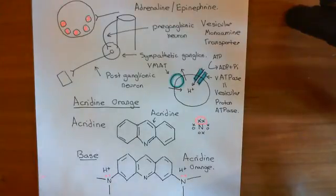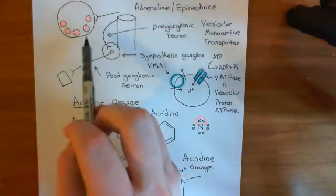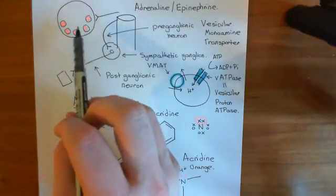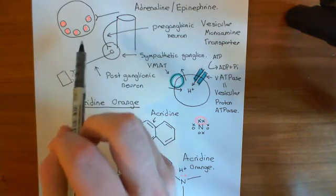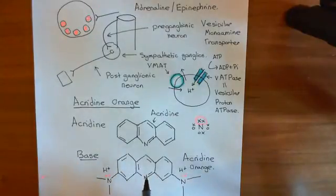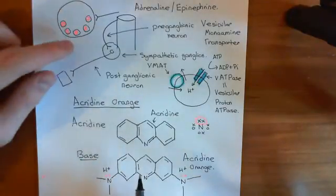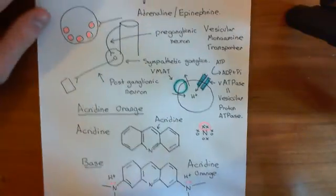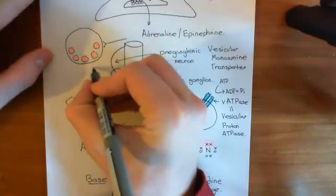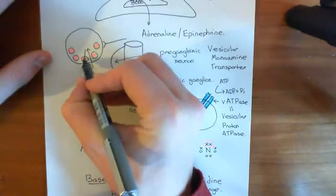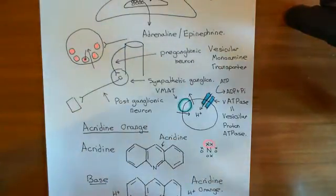Now, why is this ideal for acridine orange? When we put in the acridine orange and it's initially in the normal cellular fluid, when proton levels are at normal, neutral pHs, the molecule doesn't get protonated. So it's initially uncharged, which means it can diffuse through the plasma membrane and into the vesicle.